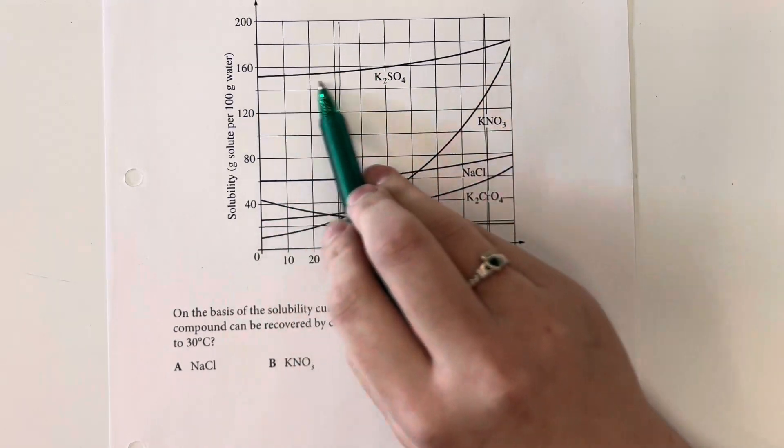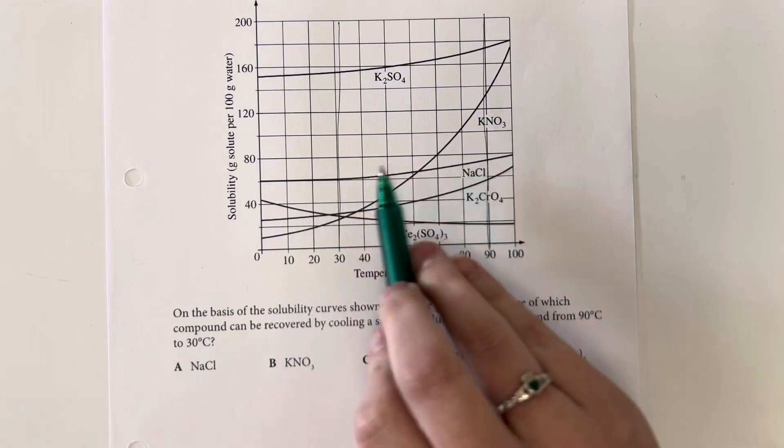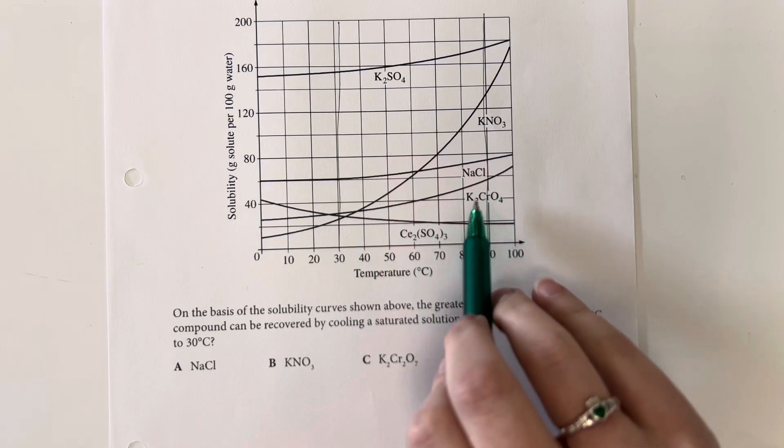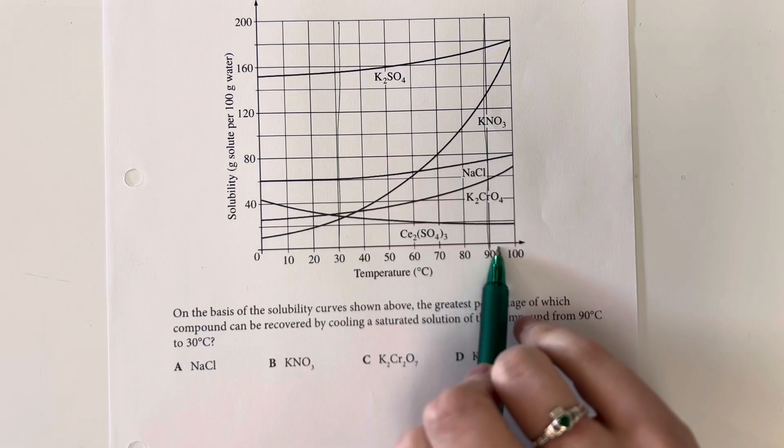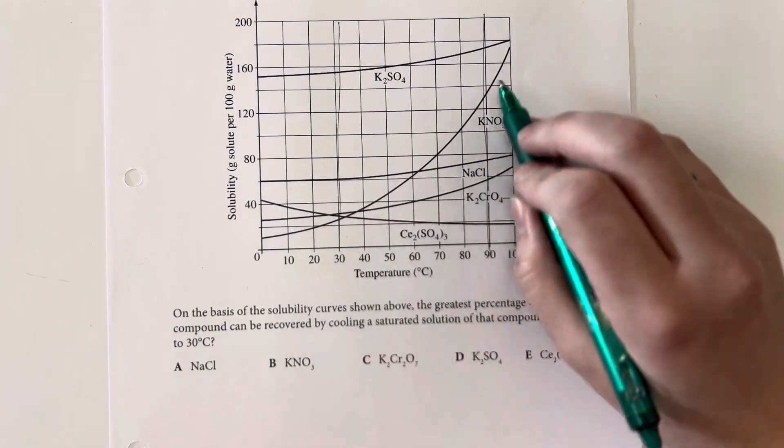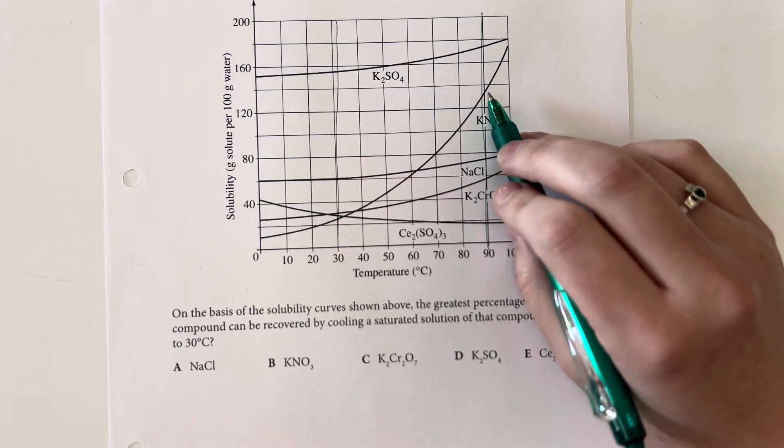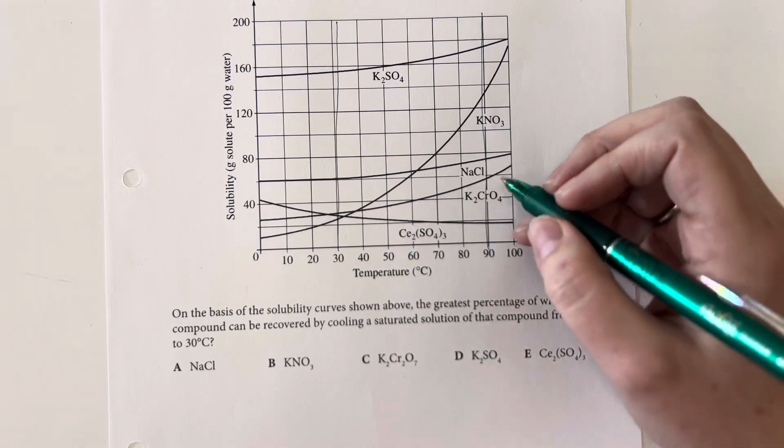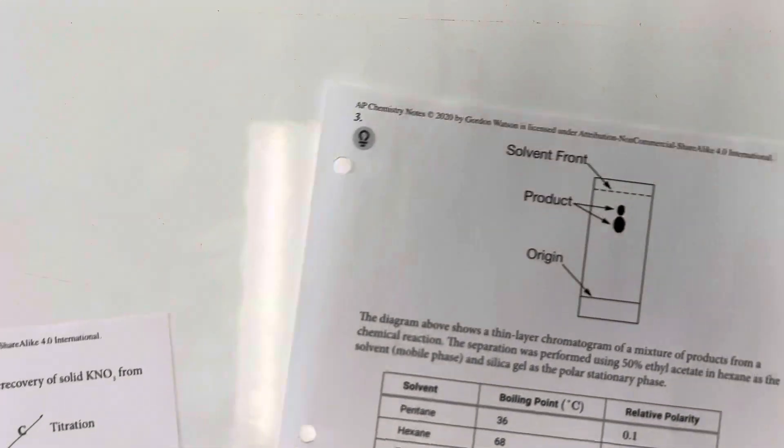You can see that the potassium sulfate solution is approximately the same. The sodium chloride solution is approximately the same. Potassium chromate solution is approximately the same. The selenium sulfate solution is also approximately the same. The only one that has a very big difference between how much can be dissolved at 90 degrees versus 30 degrees is going to be potassium nitrate. So that's going to be the compound that would best be precipitated out by decreasing the temperature from 90 to 30 degrees.